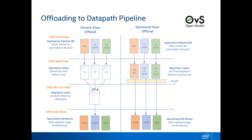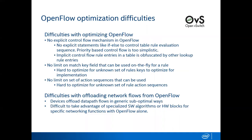We don't believe OpenFlow alone can support this type of optimal offloading. In OpenFlow, there is no explicit control flow mechanism, no explicit statements like FNLs to control table rule evaluation sequences, and the priority-based control flow is too simplistic. It's true that the rule entries can be used for control flow purposes. However, those rules are obfuscated by other lookup rule entries. You want to take only the lookup rule entries and optimally offload to Datapath.